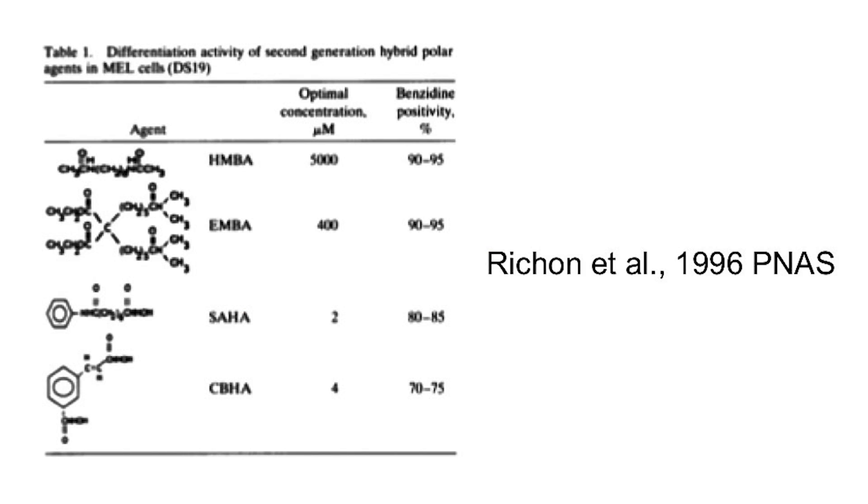HMBA also showed some anti-cancer activity in phase one. They then tested it in phase two against AML, where there were a few responders but nothing overwhelming. In parallel to these clinical trials, Marks and colleagues tried to develop molecules even more efficient than HMBA, and after many medicinal chemistry attempts they came up with a molecule called SAHA. They discovered that SAHA is a so-called HDAC inhibitor — an inhibitor of histone deacetylases. Histones are proteins that bind DNA and are involved in regulating gene expression and DNA compaction. SAHA was found to be about 2,000 times more efficient than HMBA, and they had a clear molecular target: histone deacetylases, or HDACs.